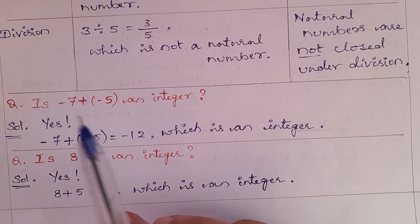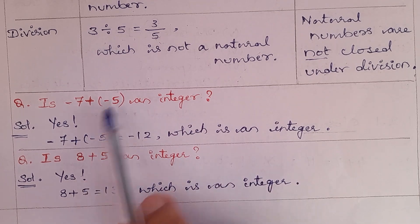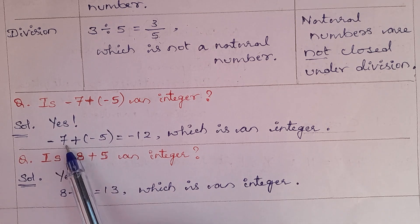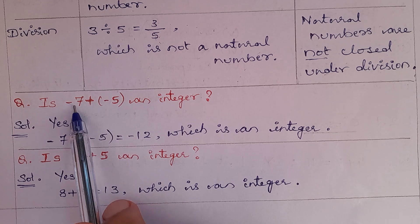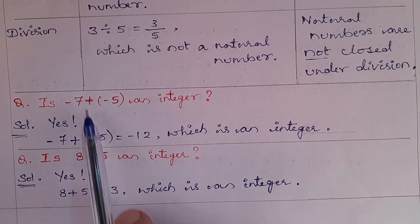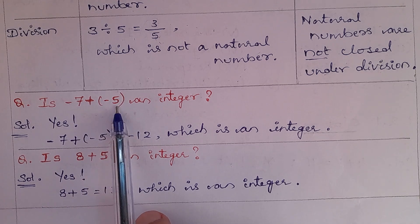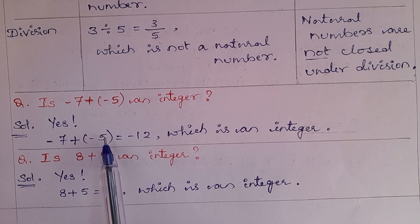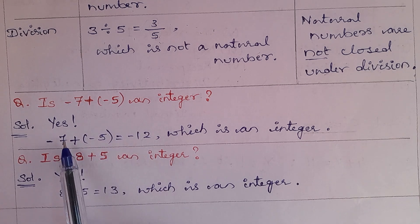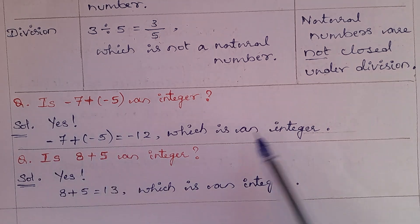Question: Is (-7) + (-5) an integer? Yes, it is an integer. Minus 7 plus minus 5 — add these two integers because both have a negative sign. Same sign, so we add. 7 and 5: counting up gives 12. Both signs are negative, so the answer is minus 12, which is an integer.